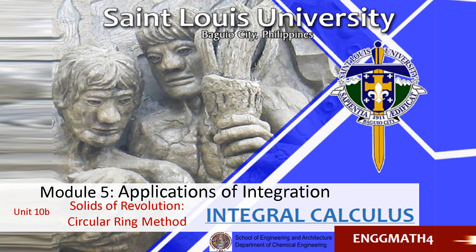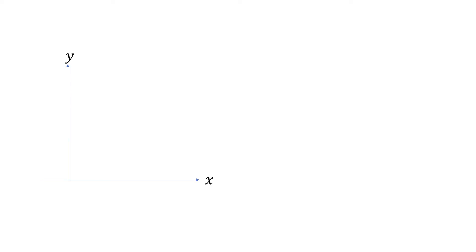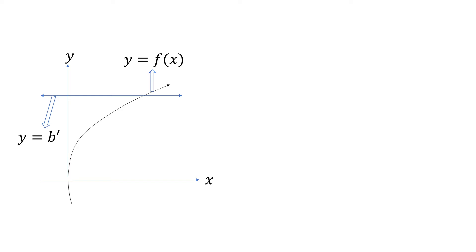Hello everyone. In this unit, solving the volume of a solid of revolution can be solved by the circular ring method or the washer method. If we consider the x and y axis and we have a curve y equal to the function of x and a line y equal to b prime, the point of intersection will be at (0,0) and another one will be at (a prime, b prime).